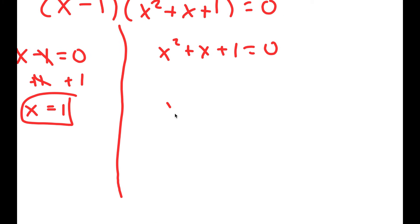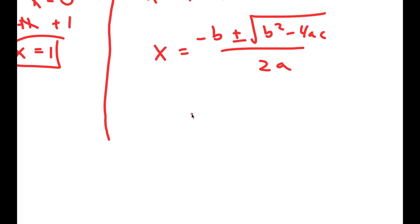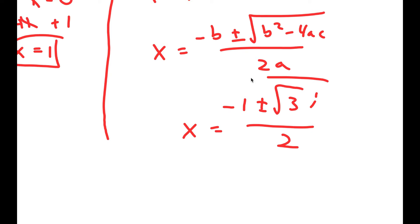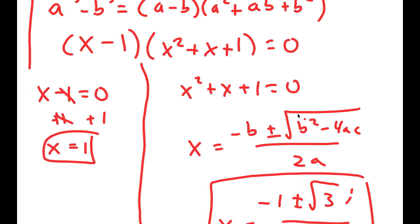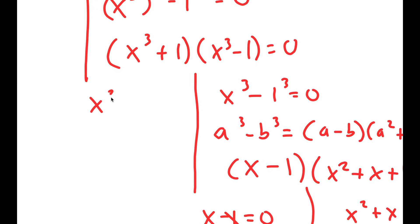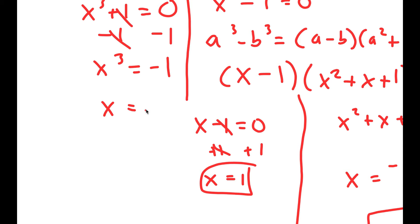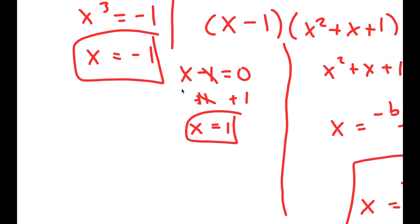For x minus 1 equals 0, I just add 1 to both sides and get x equals 1. For x squared plus x plus 1 equals 0, I can use the quadratic formula, which gives x equals negative 1 plus or minus the square root of 3 i, all over 2. Now we also have to solve x to the power of 3 plus 1 equals 0. Subtracting 1 gives x cubed equals negative 1, so x equals negative 1 is another solution.